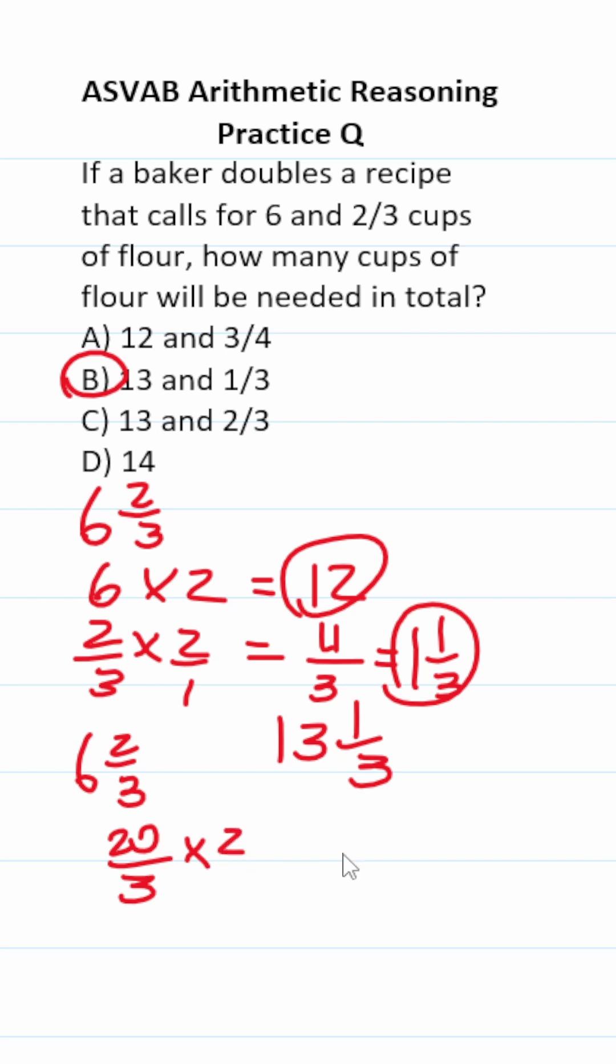Double this improper fraction. This becomes forty over three. Thirteen times three is thirty-nine, so this is thirteen and one-third. So either way works.